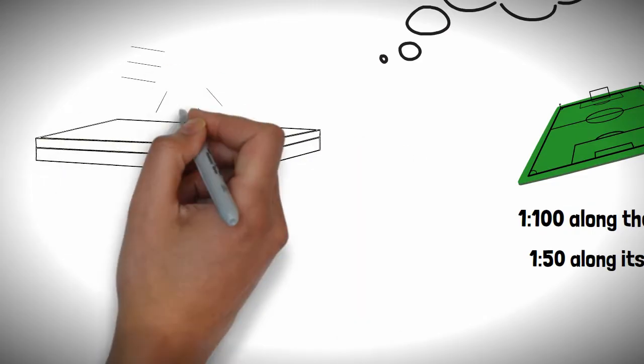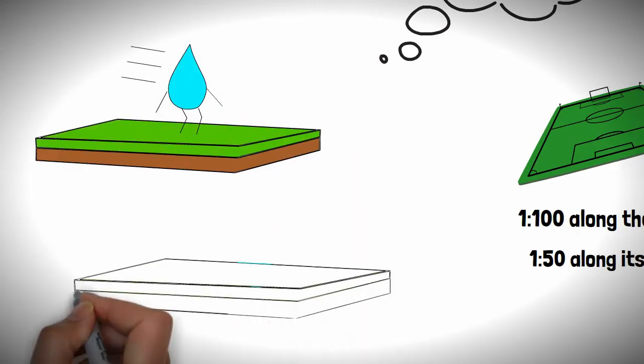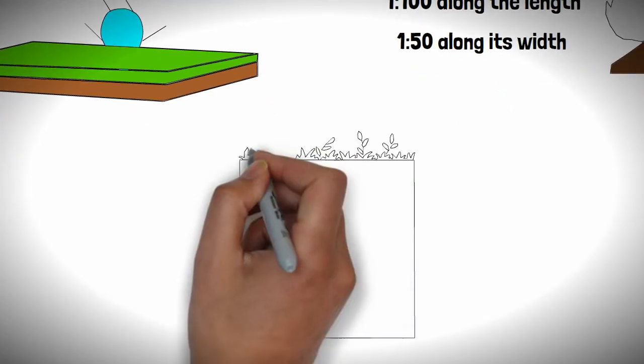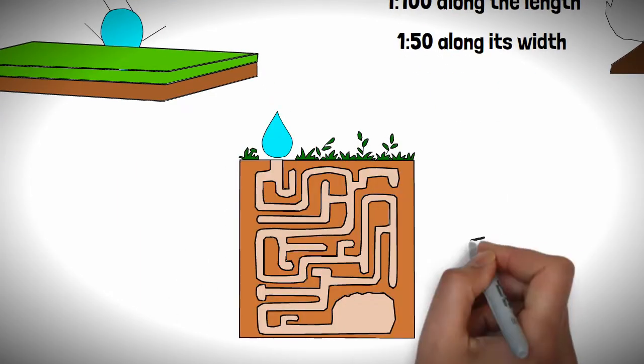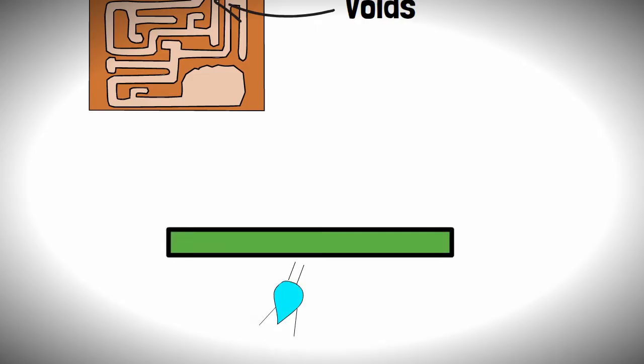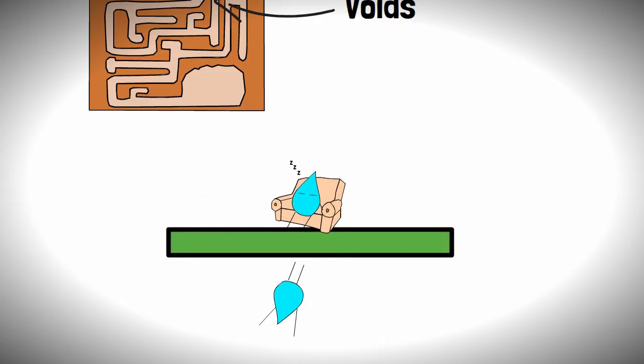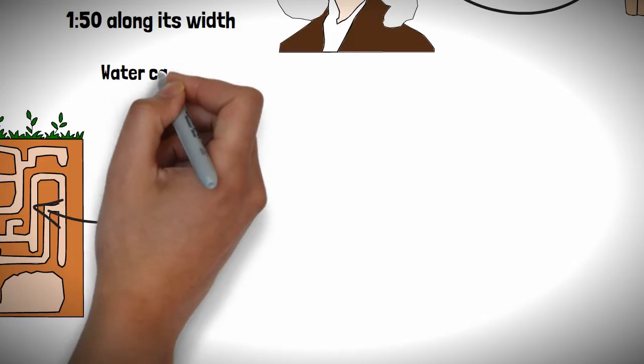Water doesn't just move across a football pitch's surface however, it will also move through the surface, squeezing through tiny gaps between the soil, also known as voids, with water below the surface being a damn sight better than water sitting on the surface of a pitch.